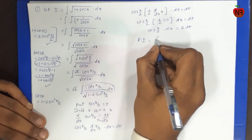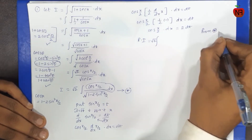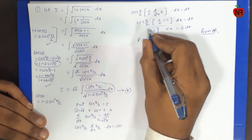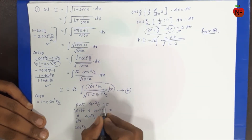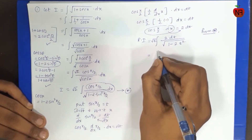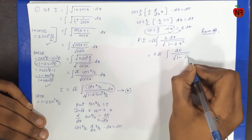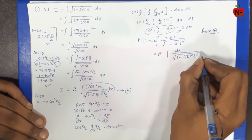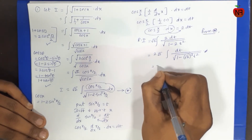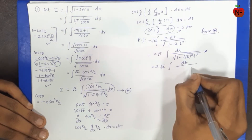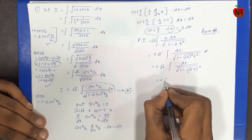Required integration is equal to: root 2 times integration — cos x into dx ki jagah par 2 dt, divided by √(1 − 2sin²(x/2)). Sin(x/2) ko t substitute kiya, toh √(1 − 2t²). Maine likha: 2√2 integration of dt upon √(1 − 2t²). Square root of (1 − (√2 · t)²) — dono ka power same hai.